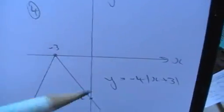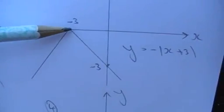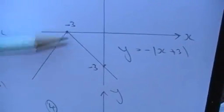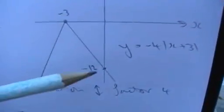Now step 4, we want minus 4 of that modulus. As we saw in the last question, the minus 4 will be a stretch this way of factor 4. So when it's stretching, this will stay exactly as it is. This will move down by a factor of 4 to be minus 12.